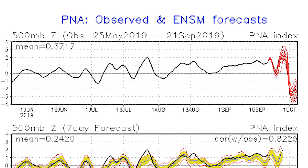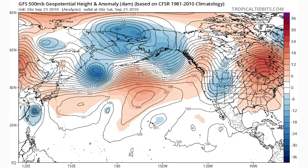From what I'm seeing on the ensemble models and other models, a negative PNA pattern looks to take hold — that's the one where we have a big-time trough in the western United States and a consistent ridge in the central and eastern United States. I know that's not what a lot of you want to hear, but that's just the facts. Looking at the GFS model for this morning on Saturday, you can see it looks all over the place in the Pacific Ocean. I would say this is leaning more towards a neutral or negative PNA.